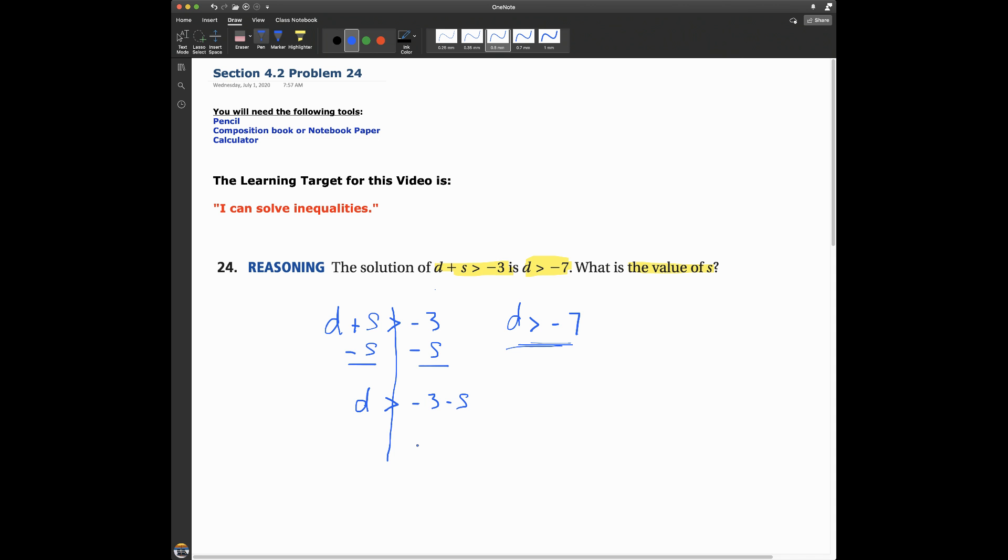So here I say D is greater than negative 7. Here D is greater than negative 3 minus S. So if I want to figure out what S has to be, then this expression should be equal to this expression. They should be equal to each other. So let's write that down.